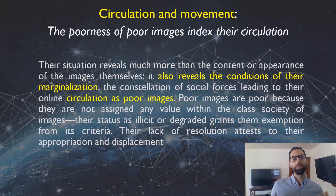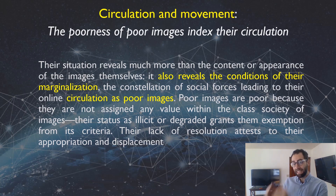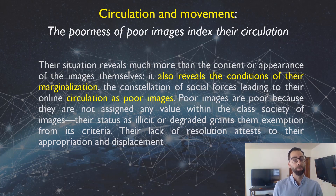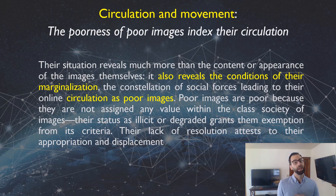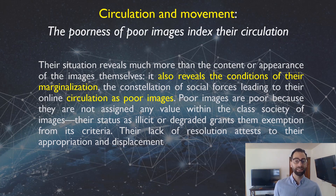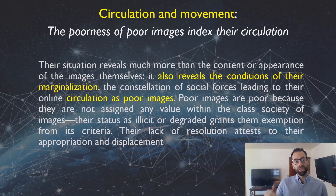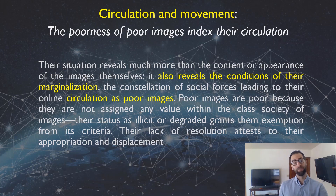The third major argument for the value of poor images is the idea of circulation and movement. Steyerl argues that the poorness of poor images actually indexes their circulation. She says: 'Their situation reveals much more than the content or appearance of the images themselves. It also reveals the conditions of their marginalization, the constellation of social forces leading to their online circulation as poor images. Poor images are poor because they are not assigned any value within the class society of images. Their lack of resolution attests to their appropriation and displacement.'